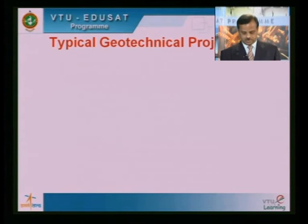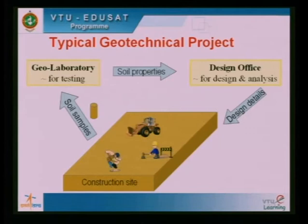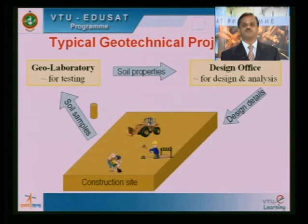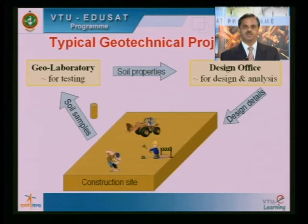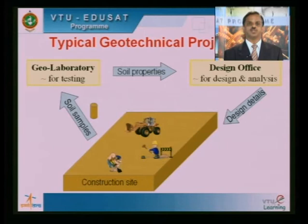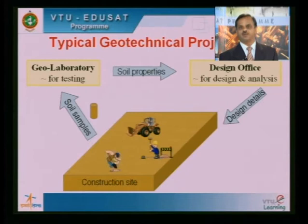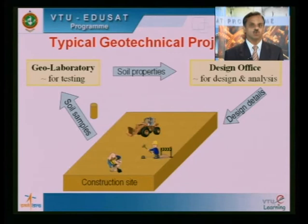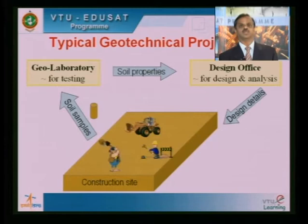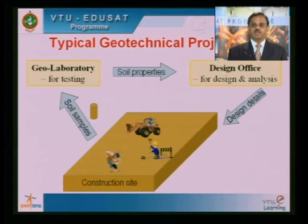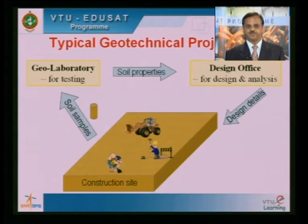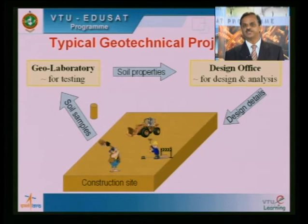A typical engineering project involves Geotechnical Engineering. What we do is prepare the ground first for any construction activity. At the construction site, the first thing done is to take out a sample of soil and do investigations either at the site or in the laboratory. All these tests help in determining the soil properties, which are used in the design office to find whether the given soil is capable of taking the load — to design the structure to take care of the forces coming. This routine process includes soil sample extraction, determination of soil properties, and those design details go to the field for construction.